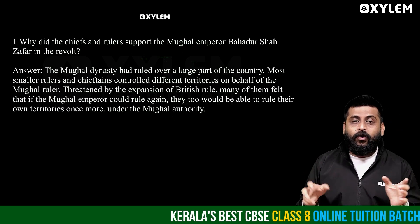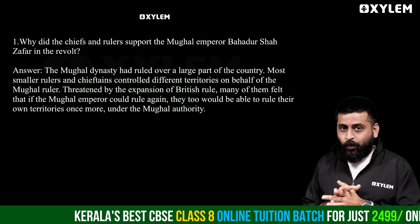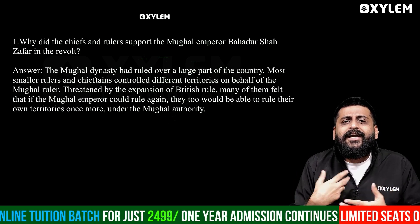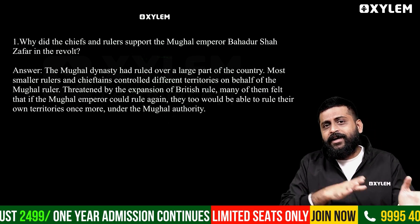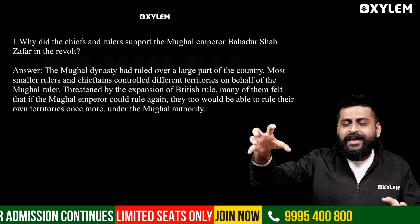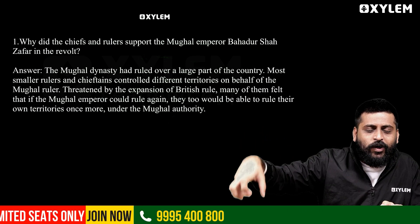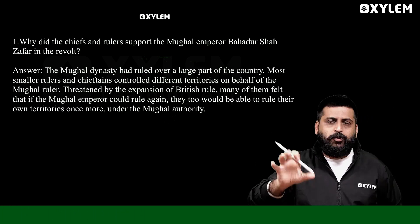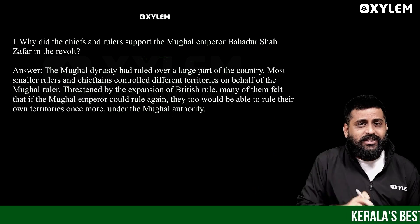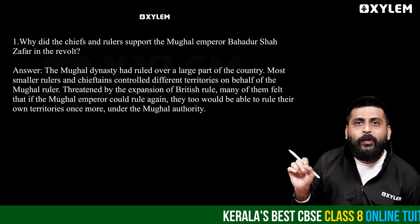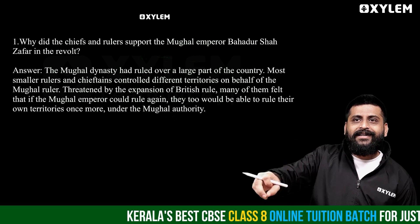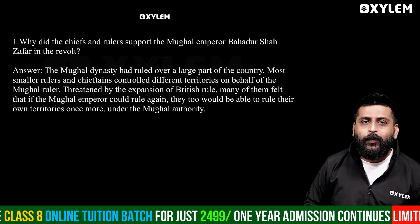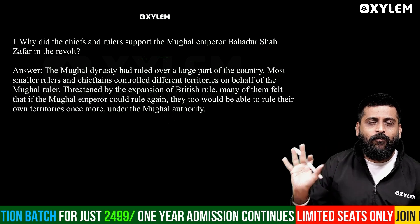Why did the chiefs and rulers support the Mughals and Bahadur Shah Zafar in the revolt of 1857? The Mughal dynasty had ruled over a large part of the country. Many smaller rulers and chiefs controlled different territories on behalf of the Mughal rulers.